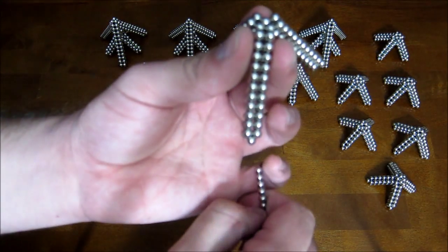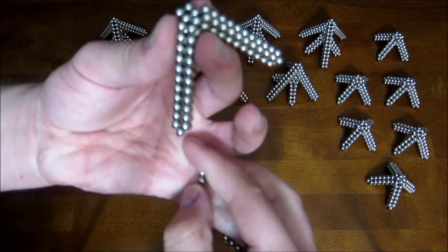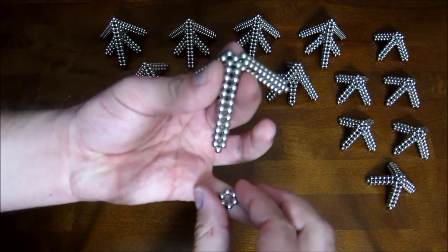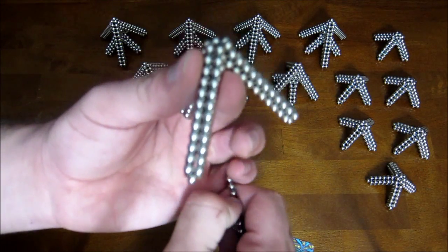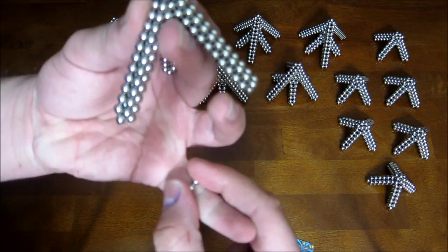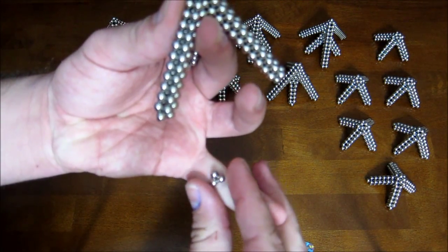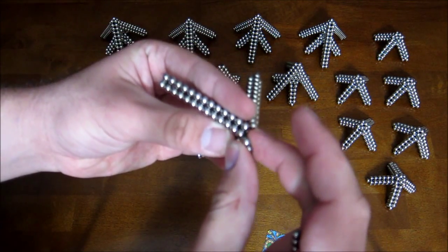And then make a hexagon ring. Add that down on top. Then make a small triangle. And add that down on top of the hexagon.